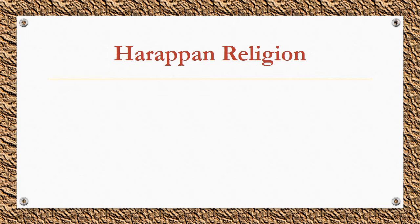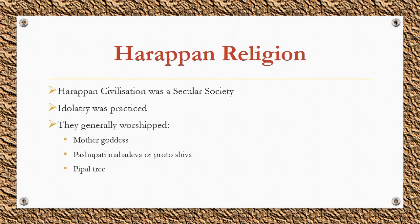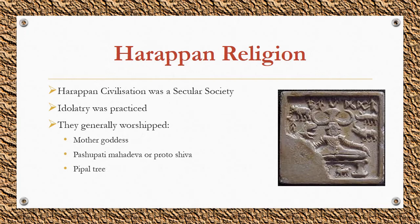From the seals, terracotta figures, and copper tablets, we get an idea of the religious life of the Harappans. The Harappan civilization is considered a secular society, as not a single structure qualifying as a temple has been found. Idolatry was practiced. The chief male deity was Pashupati, represented in seals sitting in a yogic posture with three faces, two horns, and surrounded by four animals. The chief female deity was the mother goddess, represented in terracotta figures. In later times, Linga worship was prevalent. Trees and animals were also worshipped, and they believed in ghosts and used amulets as protection.